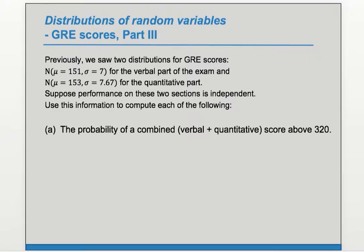Previously we saw two distributions for GRE scores: N(μ = 151, σ = 7) for the verbal part of the exam and N(μ = 153, σ = 7.67) for the quantitative part. Suppose performance on these two sections is independent. Use this information to compute each of the following: Part A, the probability of a combined verbal plus quantitative score above 320.